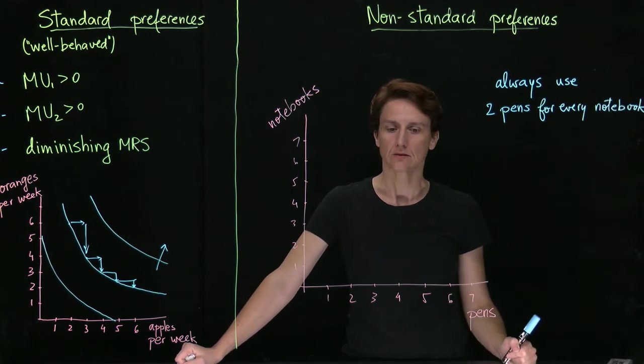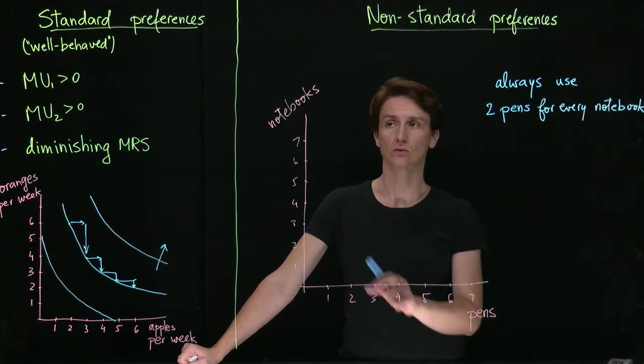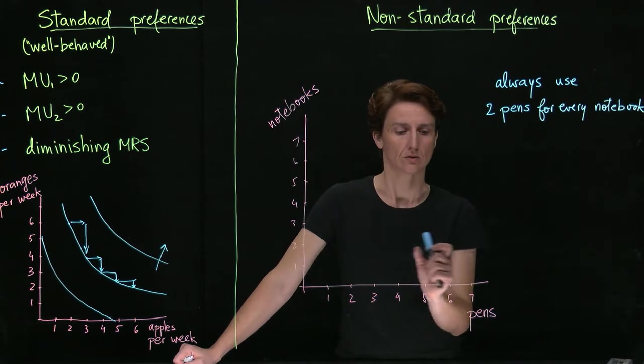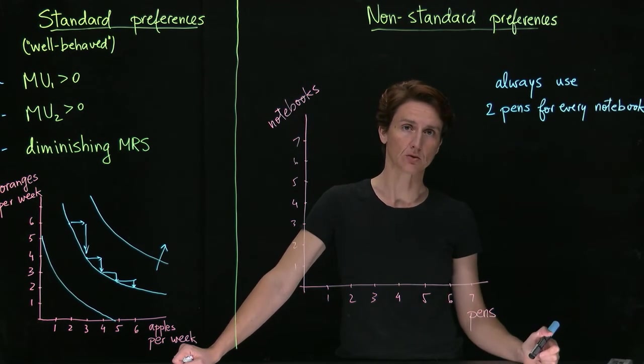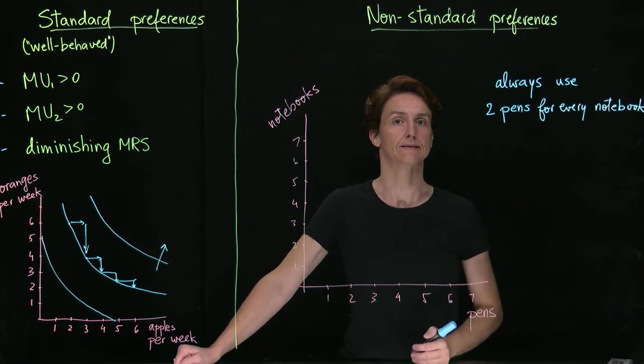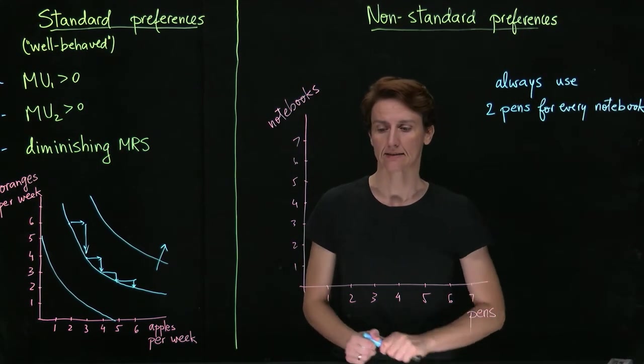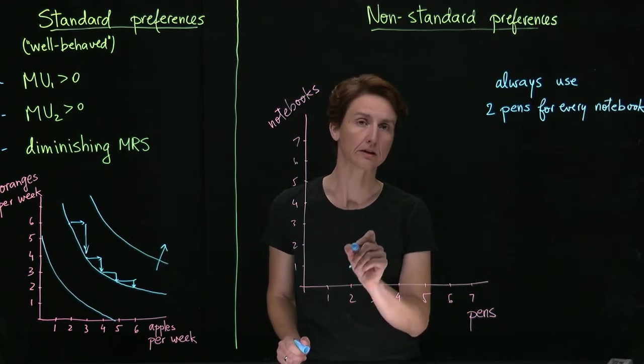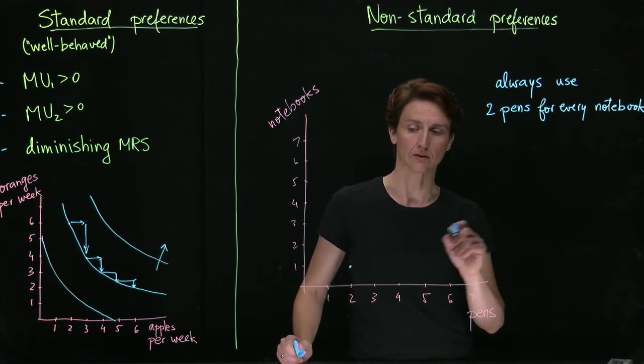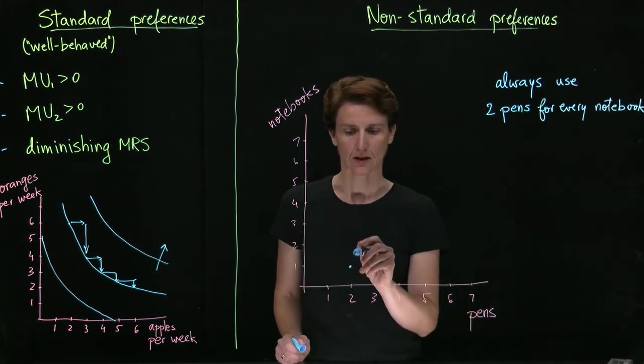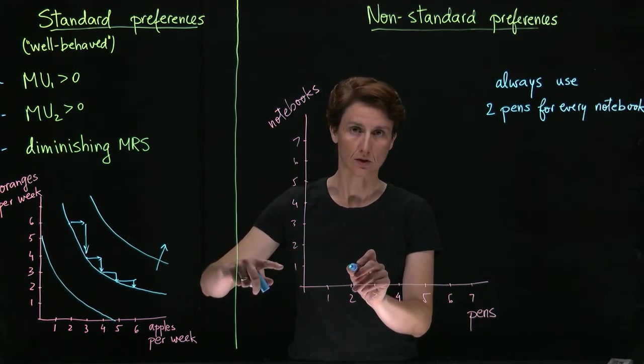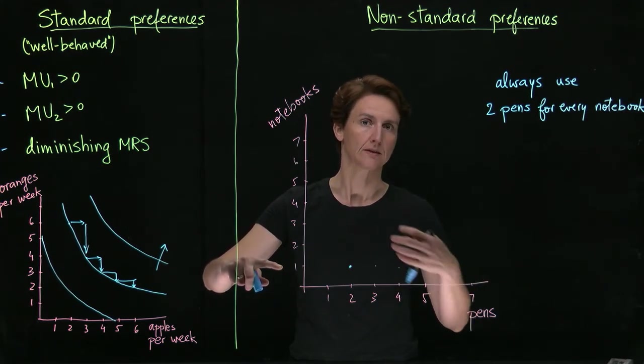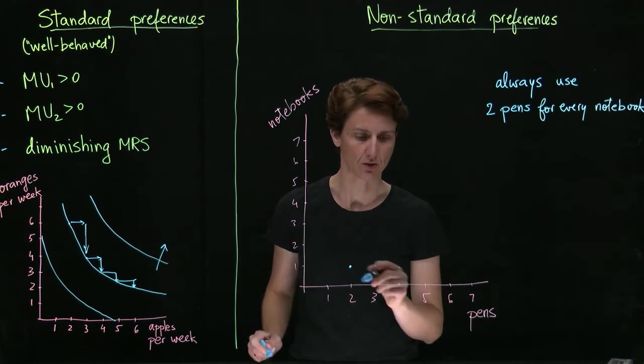Consider these preferences where we have someone who likes to use pens to take notes in notebooks, and that's the only time they use either pens or notebooks. Furthermore, one pen is only going to last about half a notebook, so for every notebook they have to use two pens. What will indifference curves look like in that case? Well, let's start from a point where they have two pens and one notebook and ask ourselves which direction can we go while not increasing or decreasing utility. If we're keeping the number of notebooks at one, then even though we're adding pens, utility of the consumer won't go up since that's the only context in which they use pens.